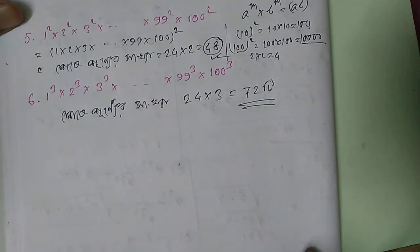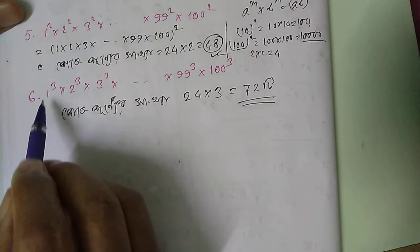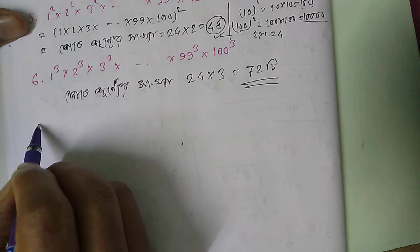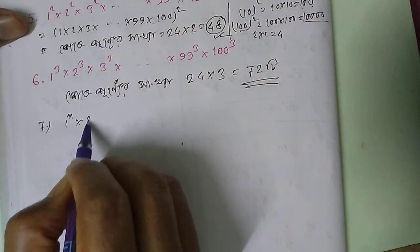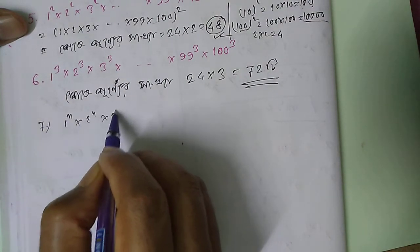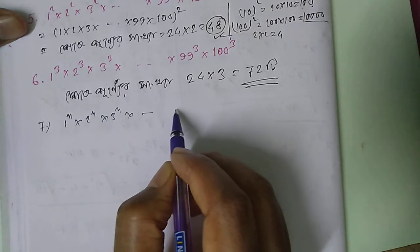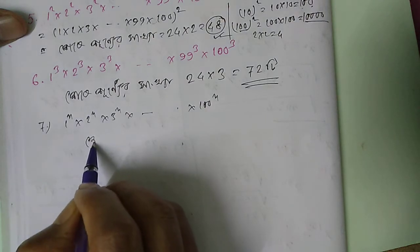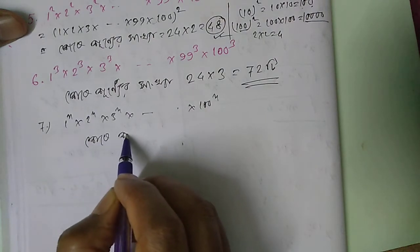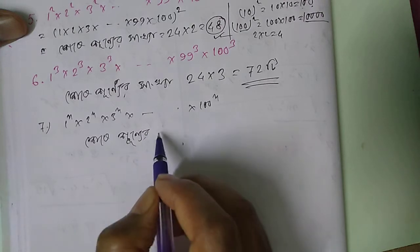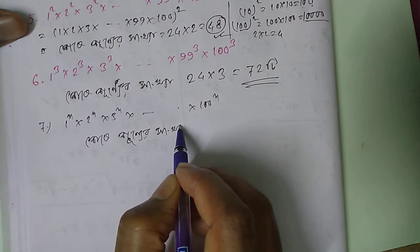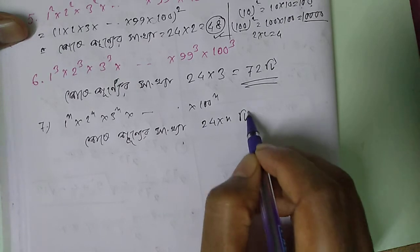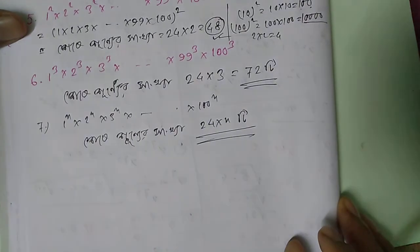Now let's see: 1 to the power n, 2 to the power n, 3 to the power n. So we can get 100 to the n, and we can get 100 to the nt.